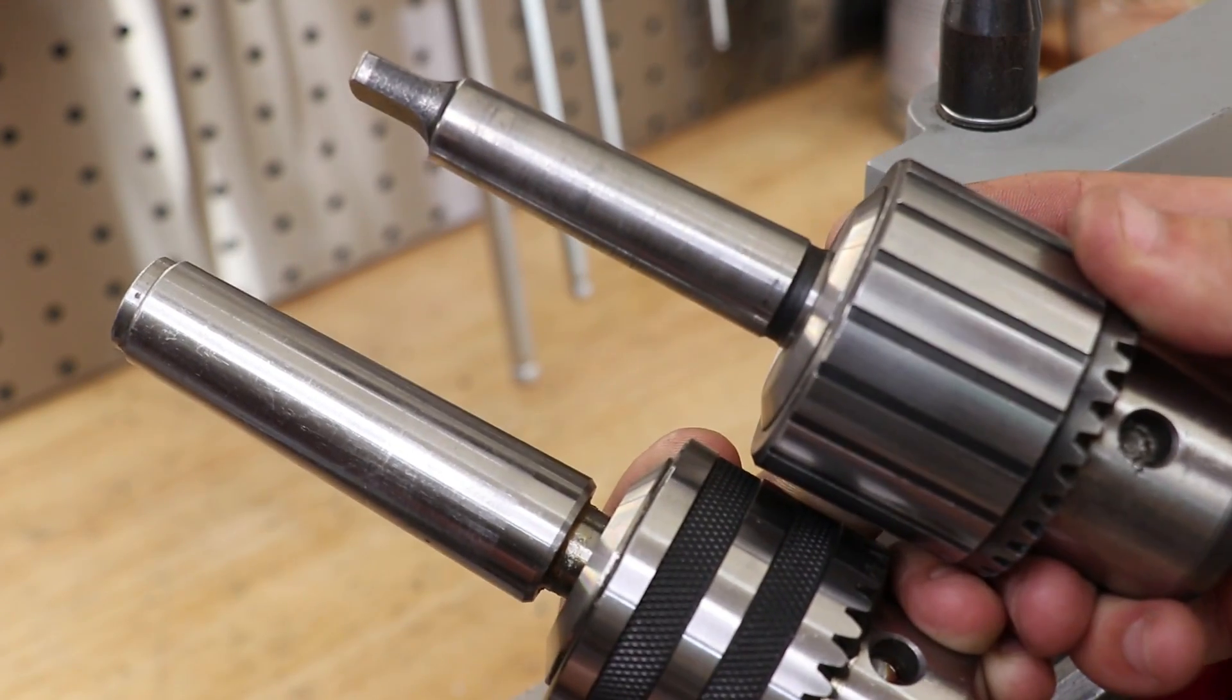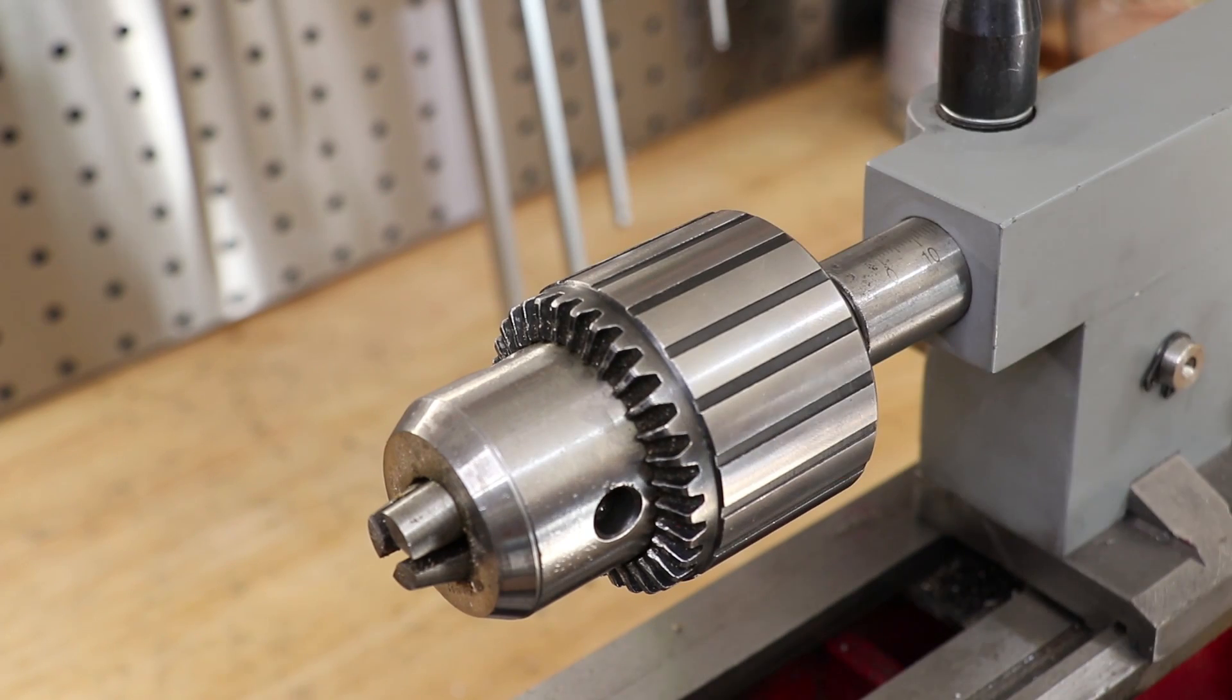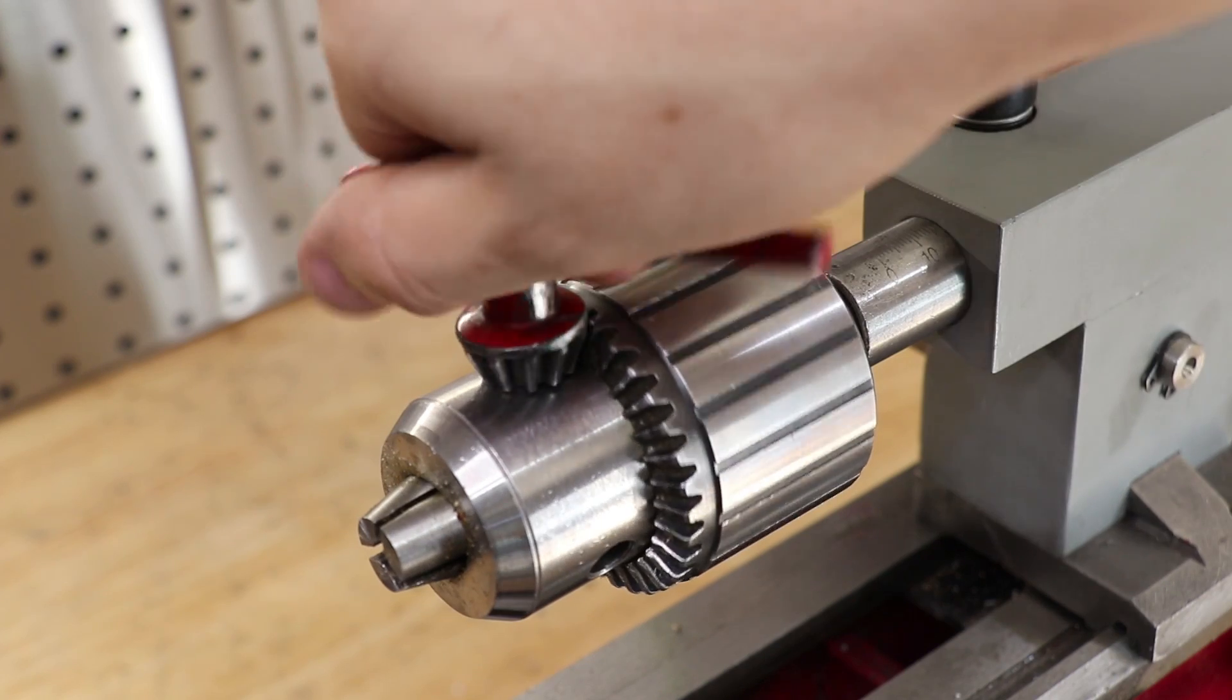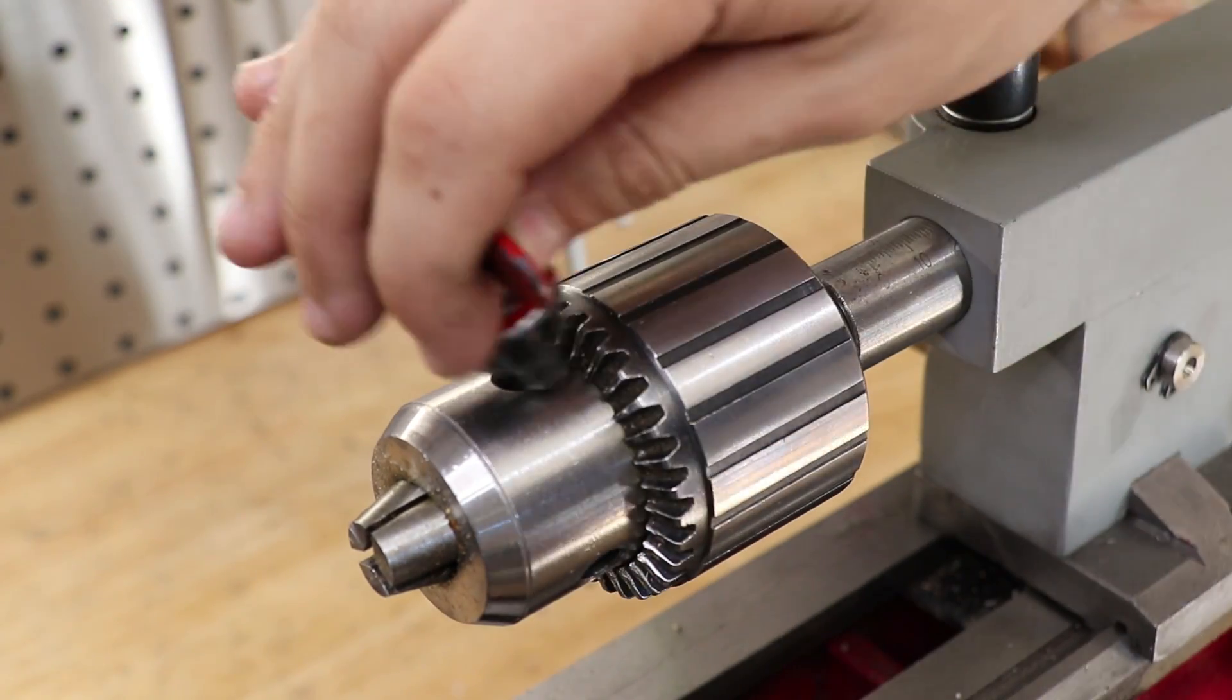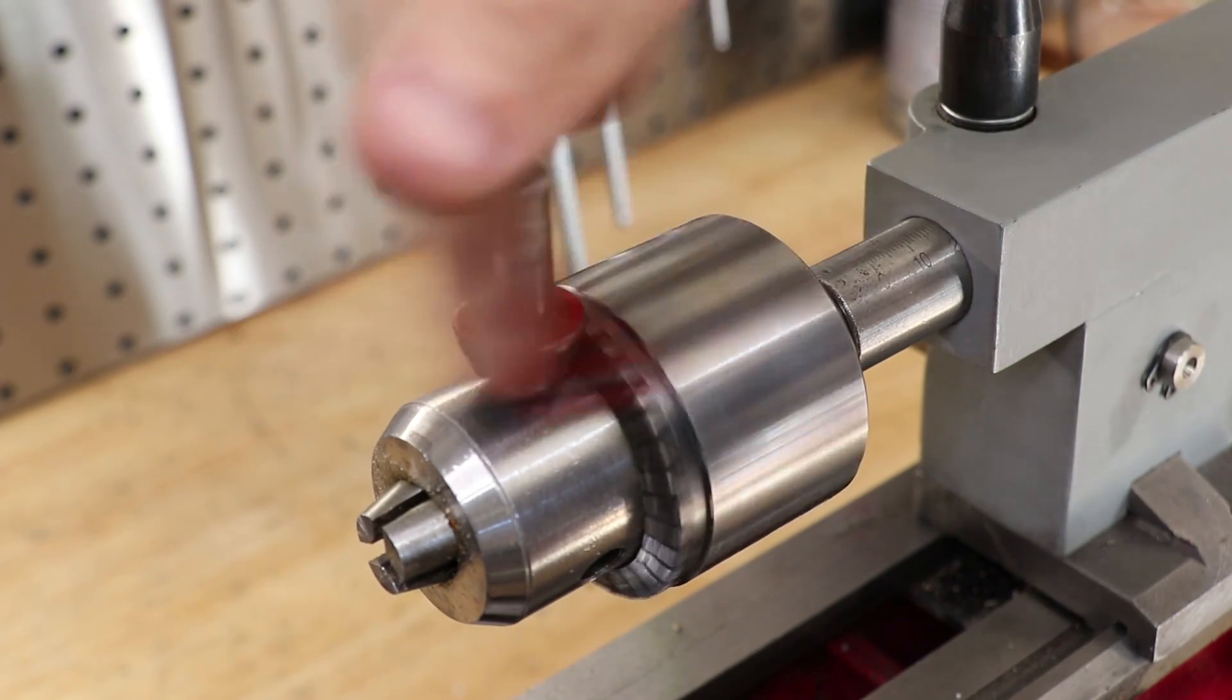My lathe, for example, is a Morse 2 taper, so it has a Morse 2 tang on it. Whilst everyone has their preferences, I prefer to use a keyed chuck over a keyless one. I get a much higher clamping pressure using a keyed chuck, and I think it's worth it to me, even if I am always losing the key to it, hence why I spray paint the key red, so it's easier to spot.